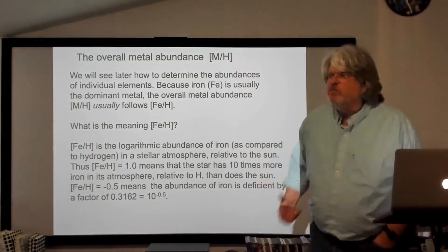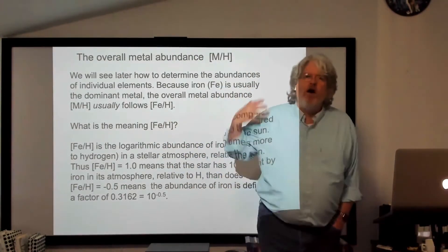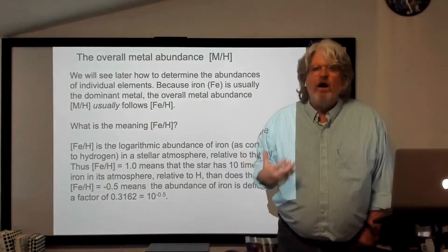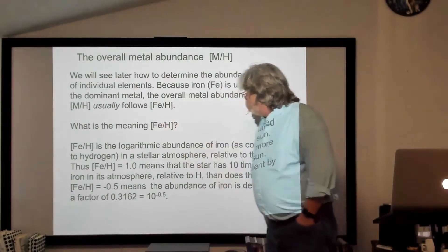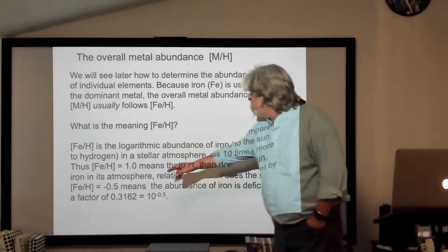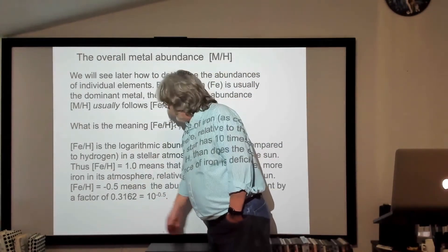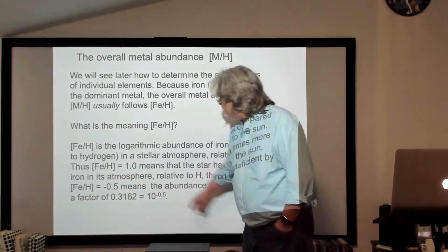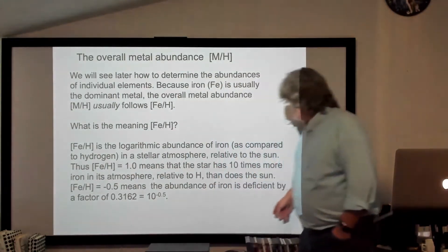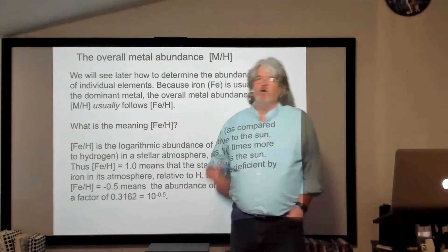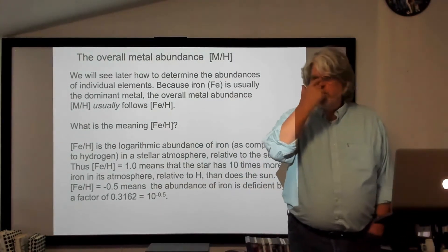If Fe over H is minus two, 10 to the minus two is one one-hundredth, so the iron abundance relative to hydrogen in the star is 100 times lower than what we find in the sun. That's what this notation means. So if you look and you see it's an old disk star with an iron abundance of negative 0.5, that means its abundance of iron is deficient by about a third — 10 to the negative 0.5 — compared to the sun, looking at the iron to hydrogen ratio.